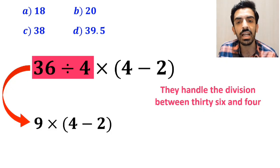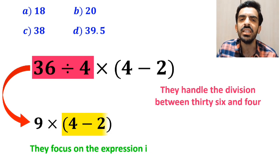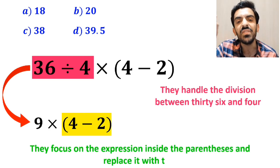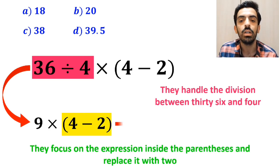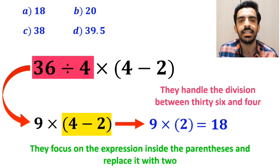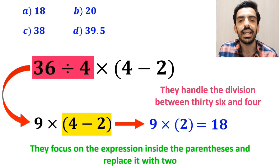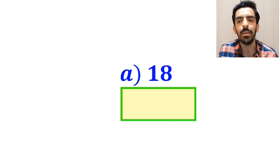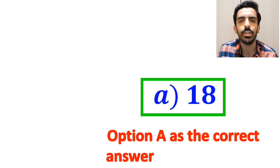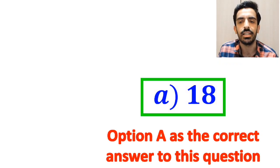In the final step, they focus on the expression in parentheses and replace it with 2. So this expression becomes 9 multiplied by 2, which equals 18. Then they quickly look at the options and choose option A as the correct answer. But we were tricked — it's not the correct answer.